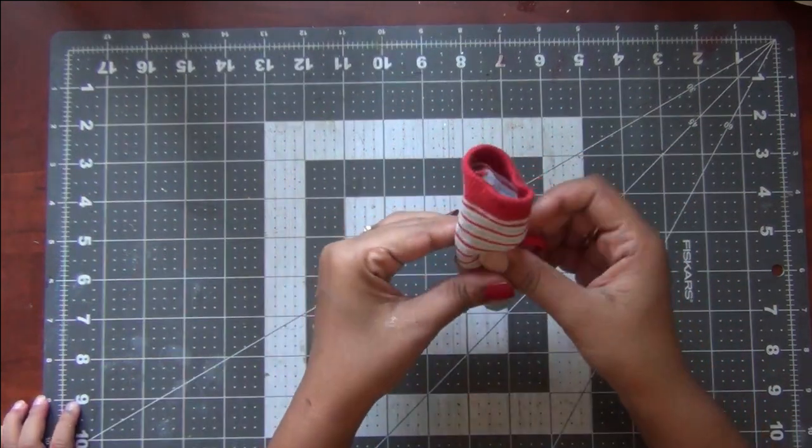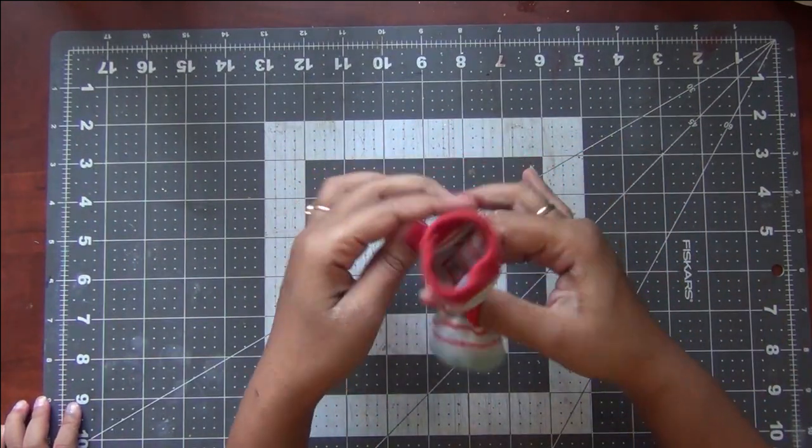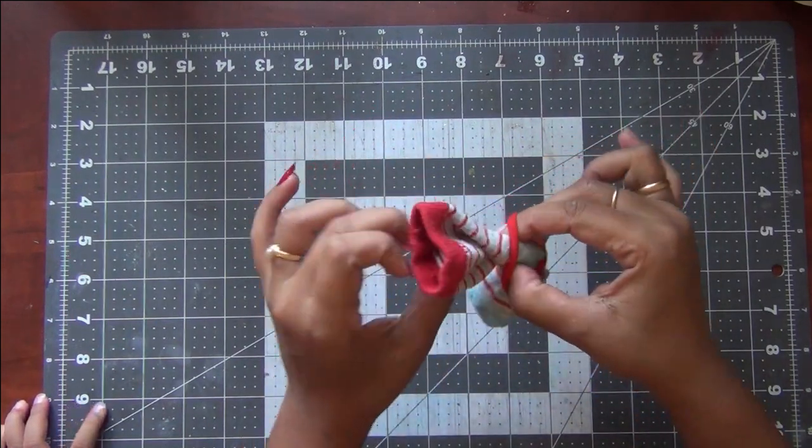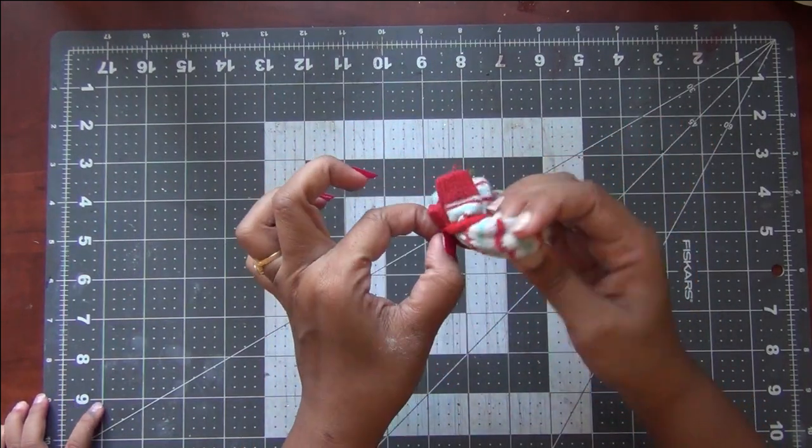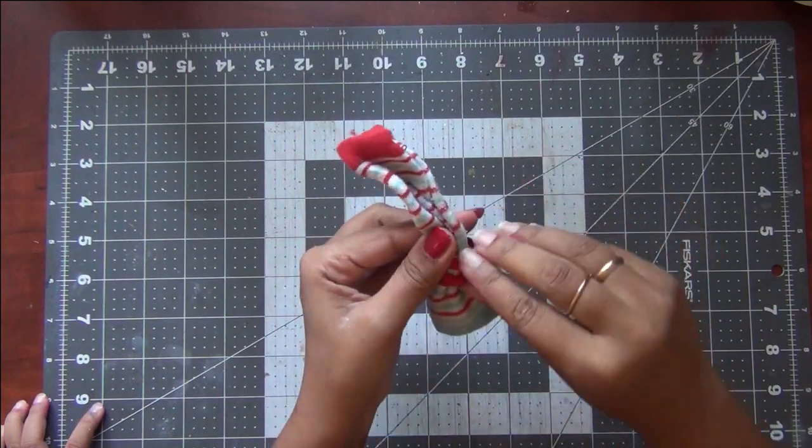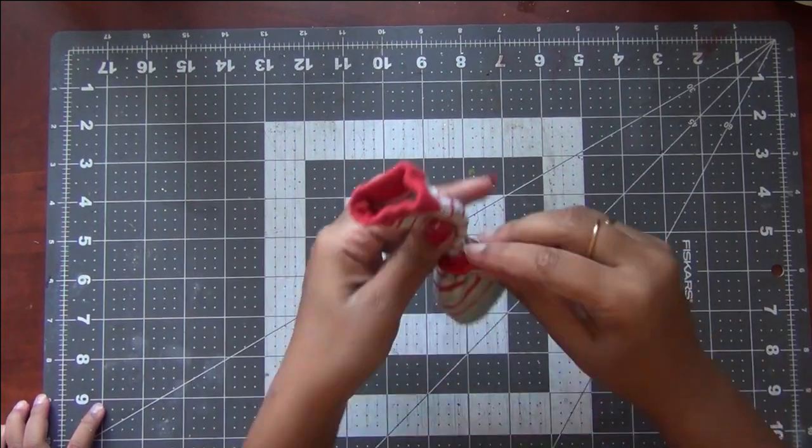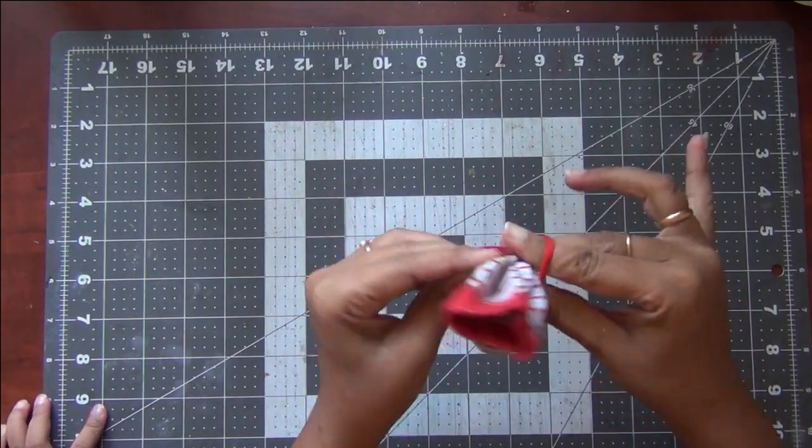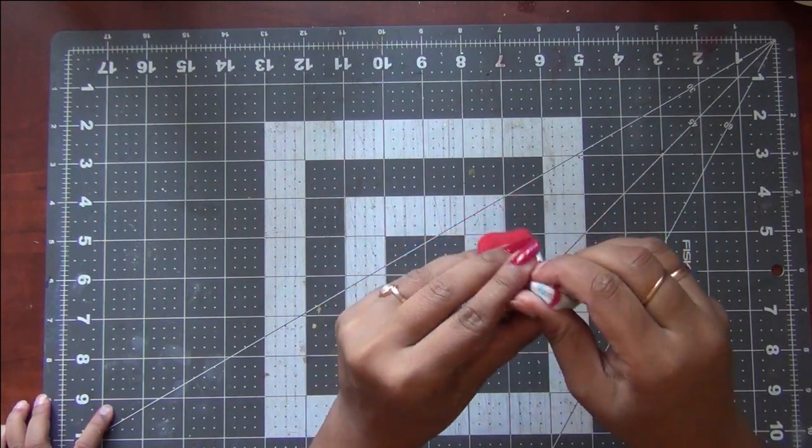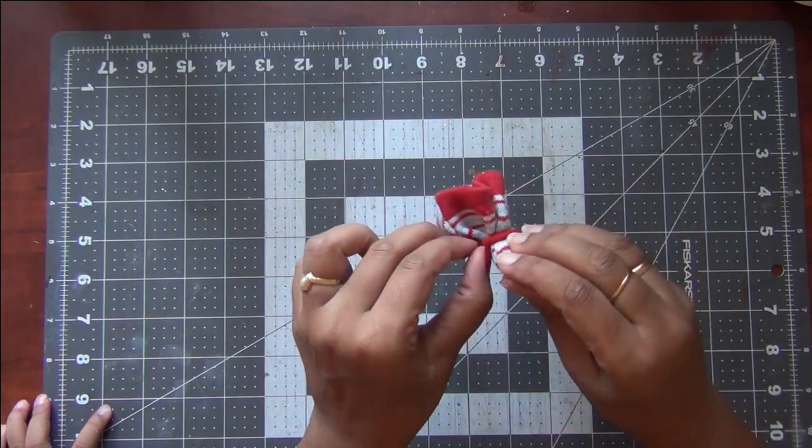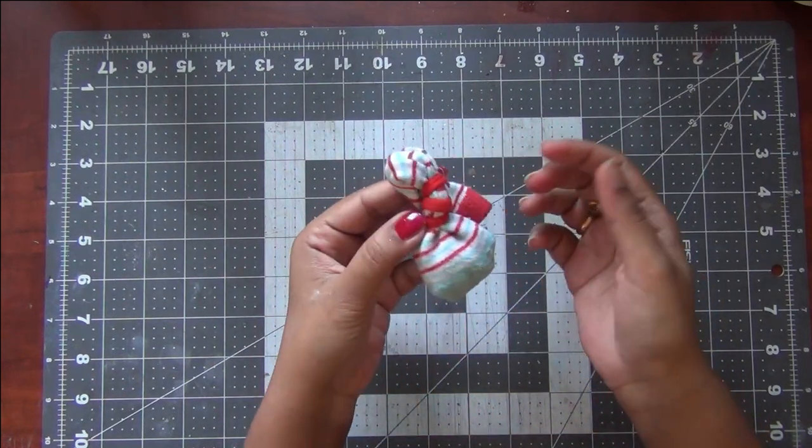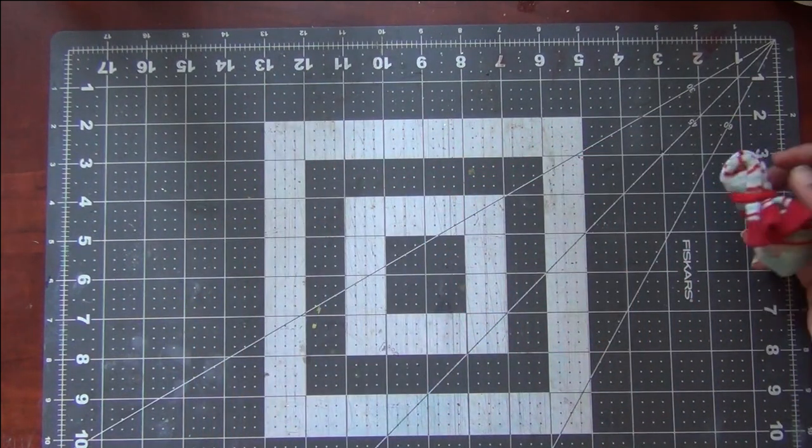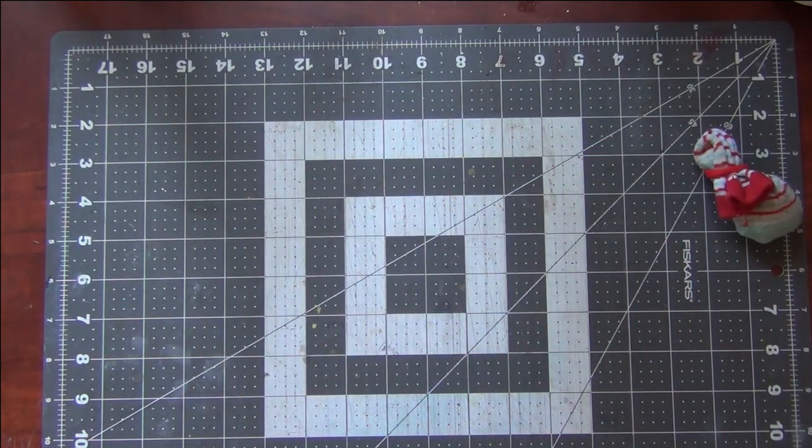Alternatively, you can also cut the excess amount of socks and stitch it up, but I thought just fastening it with a hair tie would do. Also this way I can reuse my socks when my powder is over. So all I am doing is I am tightly fastening it with a hair tie and my DIY anti-static embossing pouch is all ready.